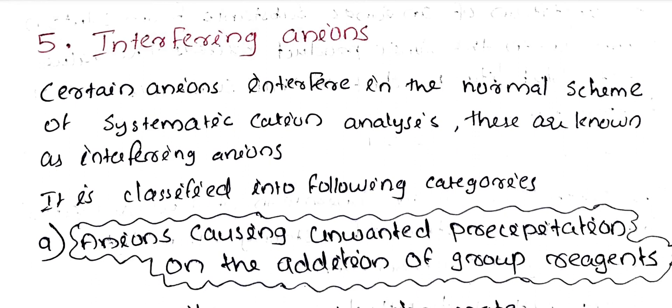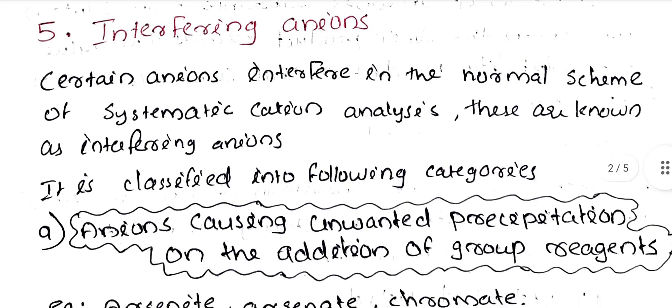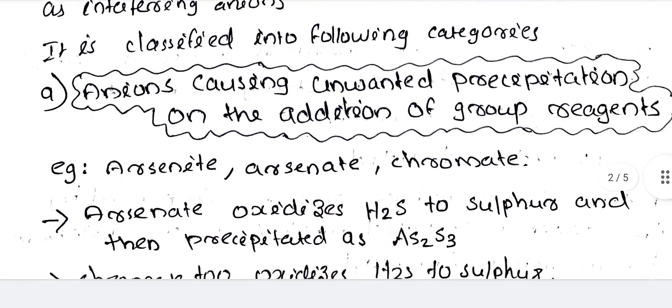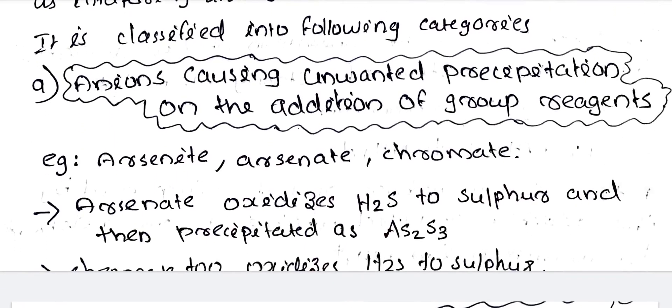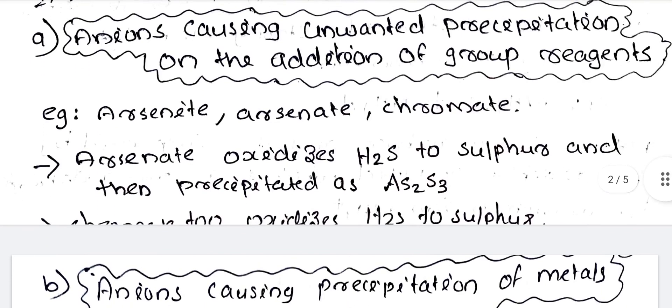What are the interfering anions? Certain anions can interfere with the normal scheme of systematic cation analysis. These are known as interfering anions. The first category is anions causing unwanted precipitation on the addition of group reagents. Examples include arsenate, arsenite, and chromate. Arsenate oxidizes H2S to sulfur and then precipitates as As2S3.